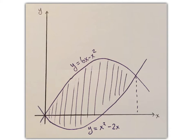Alright, so here's the picture. Notice that y equals 6x minus x squared is the top curve, at least between these two intersection points.